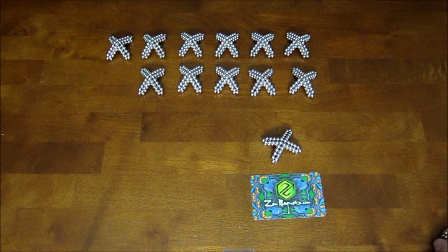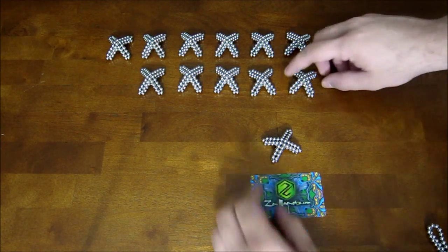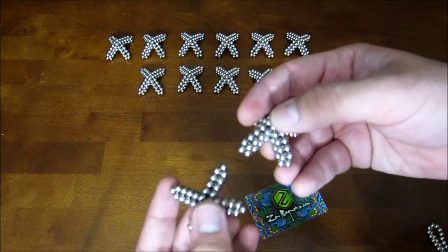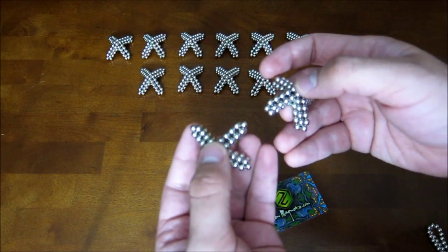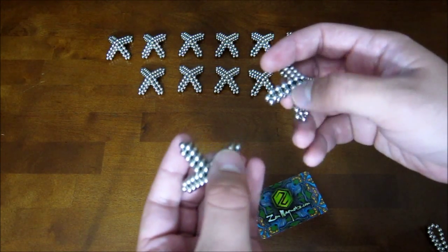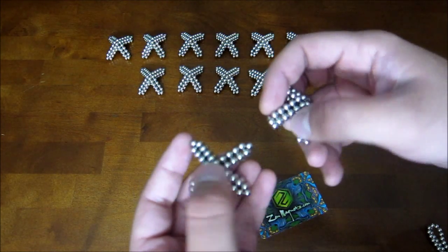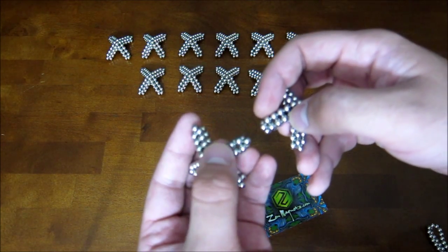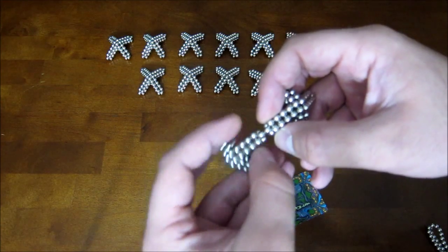And now all you want to do is take them and you want to make sure that the acute angles are kind of facing towards each other like this. And you attach the two edges together.